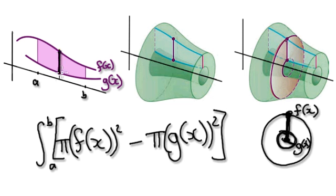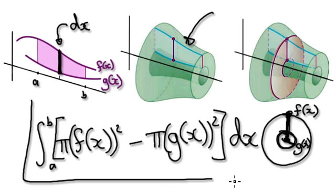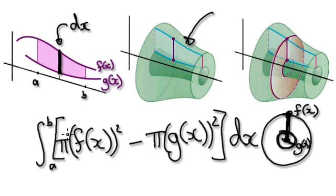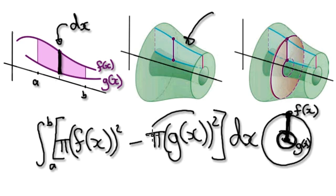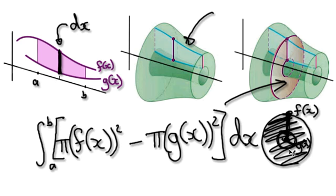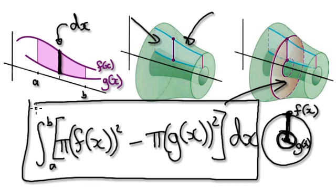Looking at this one particular washer, the thickness of the washer is dx. So to work out the volume of this solid, you integrate the washer area with respect to x. Just bear in mind that you do need to work out the area of the full big circle and then take away the whole area of the small circle — that gives you your washer. I will give you some practice in the next video.